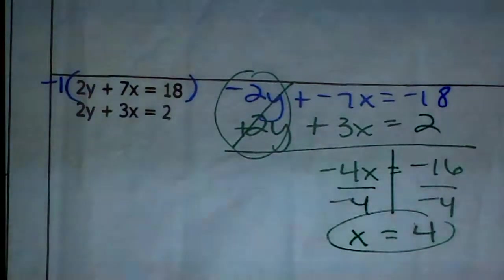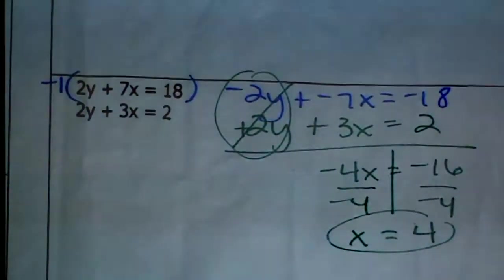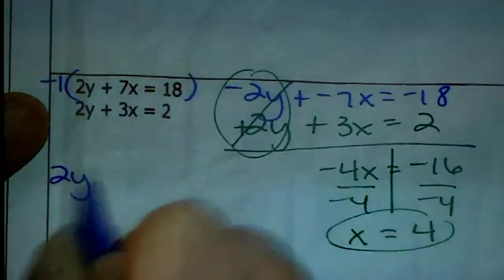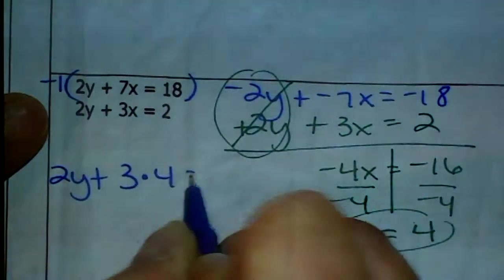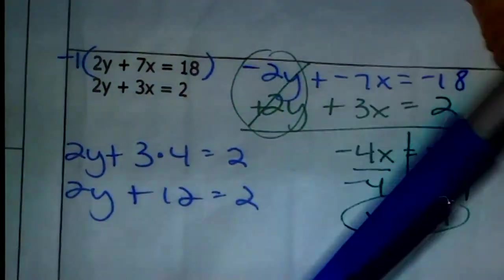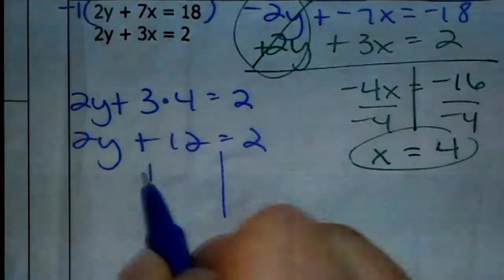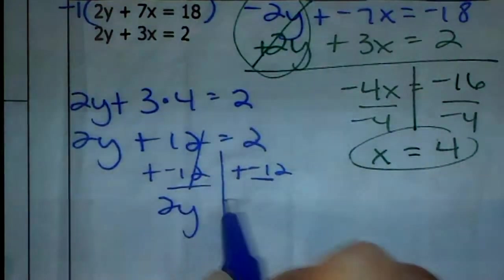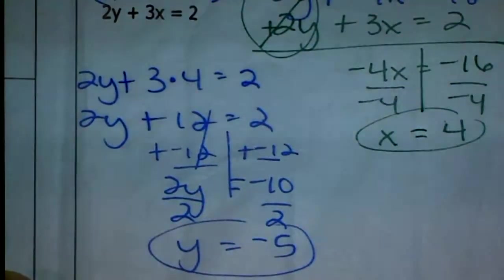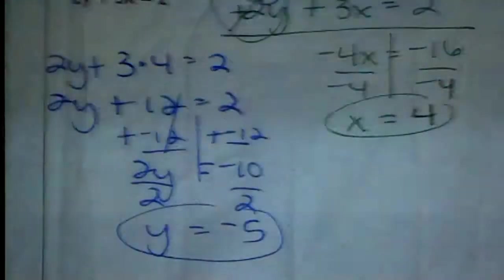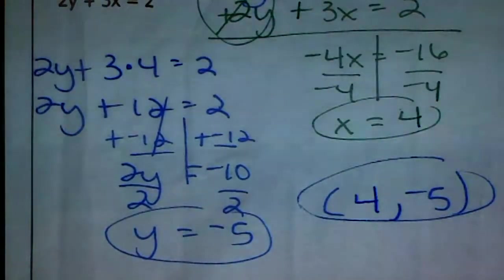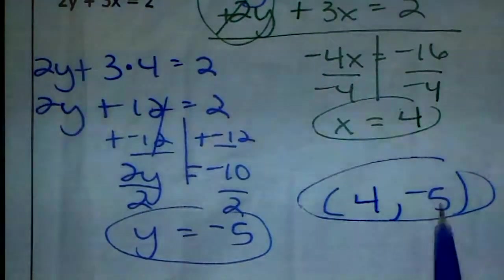Negative 7X plus 3X is negative 4X, and negative 18 plus 2 is negative 60. Wait — dividing by negative 4 gives X equals positive 4. Now that we know X is 4, I'll plug it into the bottom equation: 2Y plus 3 times 4 equals 2, or 2Y plus 12 equals 2. Subtract 12 to get 2Y equals negative 10, divide by 2, and Y equals negative 5. The solution to this system is 4, negative 5 — that's where those two lines intersect.